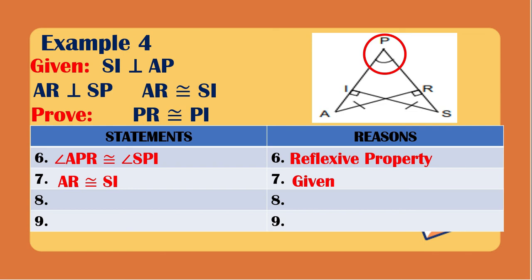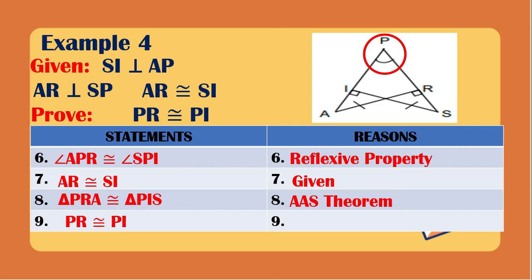For the eighth statement, we can now prove that the two triangles are congruent. Triangle PRA is congruent to triangle PIS according to the AAS theorem. Since the two triangles are proved congruent, we can say that PR is congruent to PI using CPCTC. That's how we prove the corresponding parts of congruent triangles.